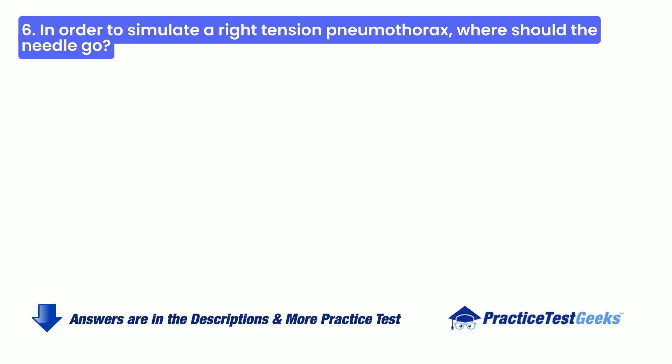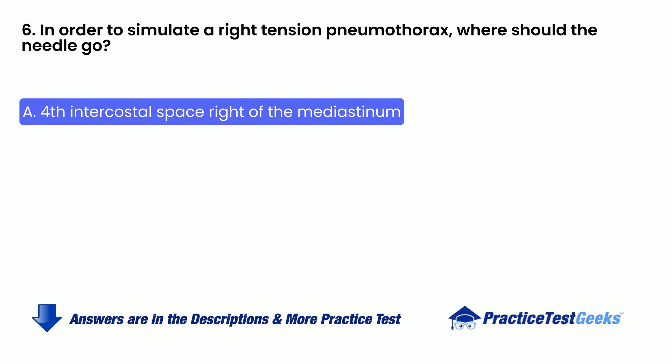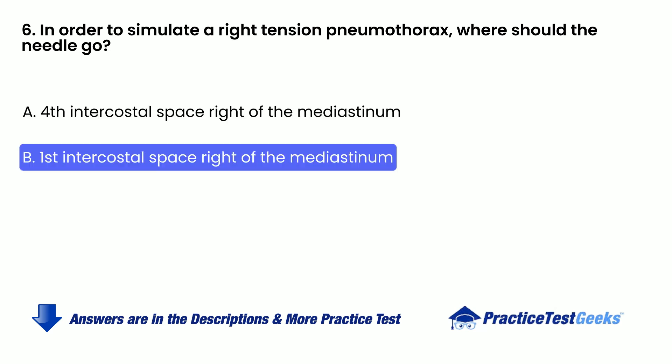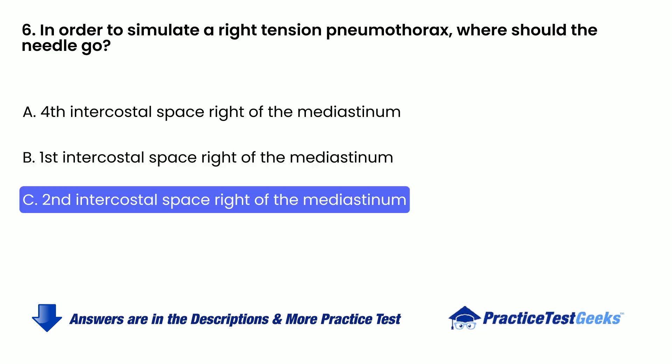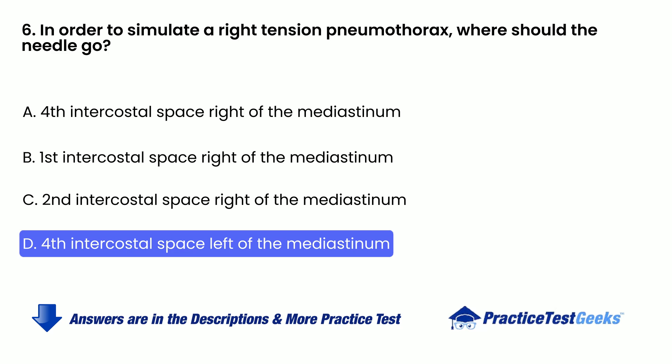In order to relieve a right tension pneumothorax, where should the needle go? A. 4th intercostal space right of the mediastinum. B. 1st intercostal space right of the mediastinum. C. 2nd intercostal space right of the mediastinum. D. 4th intercostal space left of the mediastinum.